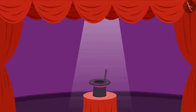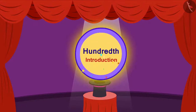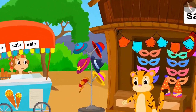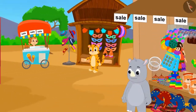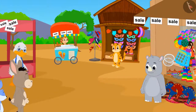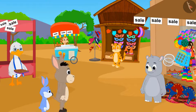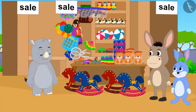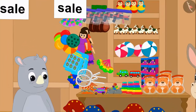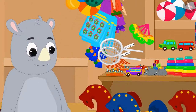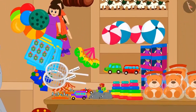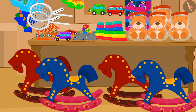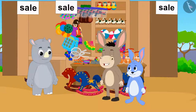Hello children! In this video we will learn about what is hundredth. There is a sale going on in several places in the Champapur market. Bunny and Bhoola have come to the market to shop. First they have come to Gaggoo's shop to buy toys. There is a huge discount on toys at Gaggoo's shop in the sale.